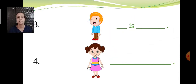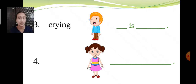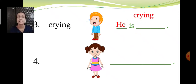Now let us go to the third picture. What is the boy doing? He is crying. The boy in the third picture is crying. How do we write now? He is crying. Crying spelling: C-R-Y-I-N-G. He is crying. The boy in the third picture is crying.